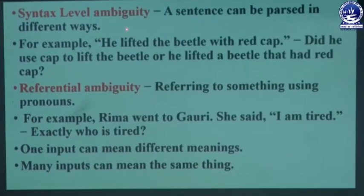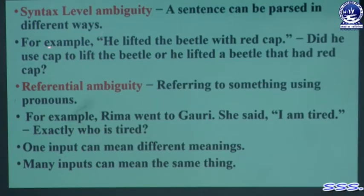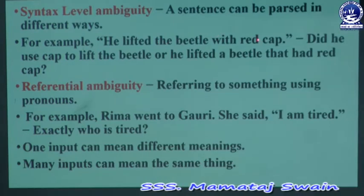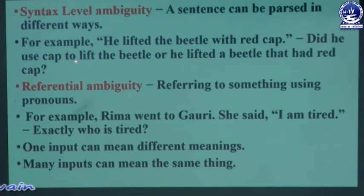Next is syntax-level ambiguity, where a sentence can be parsed in different ways. For example: 'He lifted the beetle with a red cap.' This could mean he used the cap to lift the beetle, or he lifted a beetle that had a red cap. One sentence gives two different meanings — this is called syntax-level ambiguity.